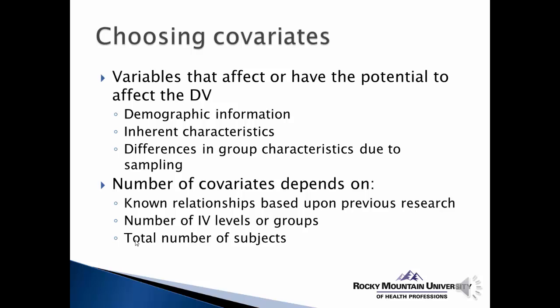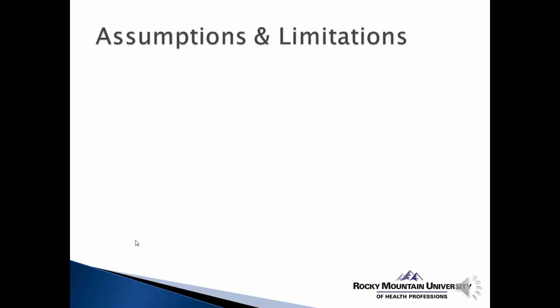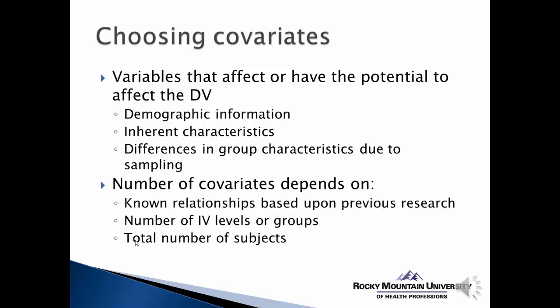And if we know those covariates are out there and we're doing something similar to what's been done before, we want to make sure we're incorporating those in our design or analysis. Typically, as the number of independent variable levels or the number of groups increases and the total number of subjects increases, that introduces the possibility for more covariates to be present. The more complex the design — whether by number of groups or number of subjects — the more potential there is for covariates to sneak in and affect our outcomes.